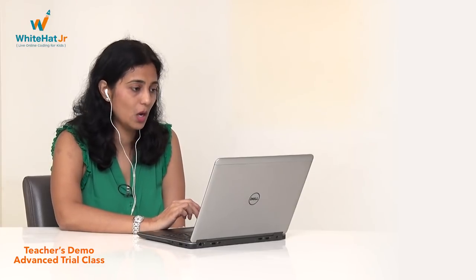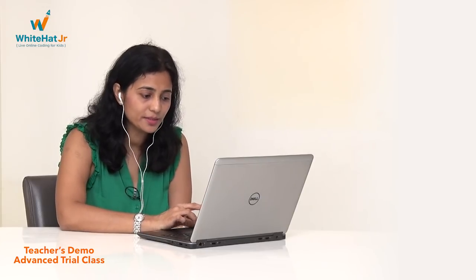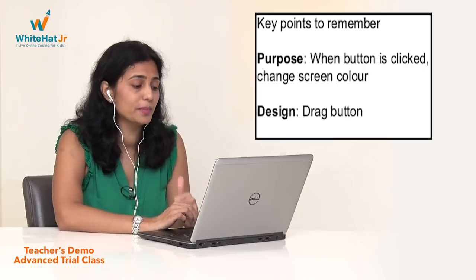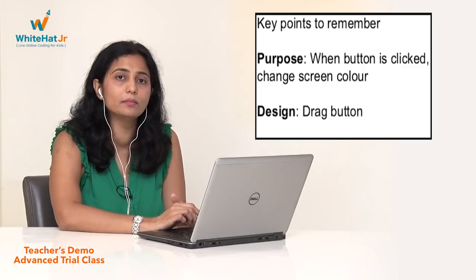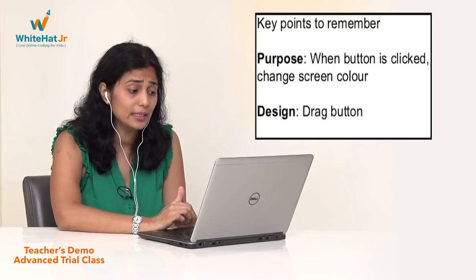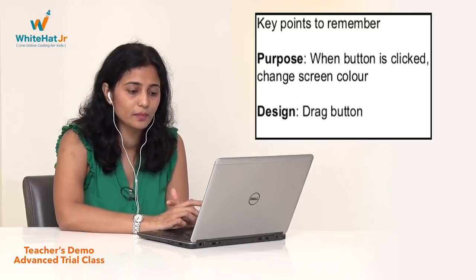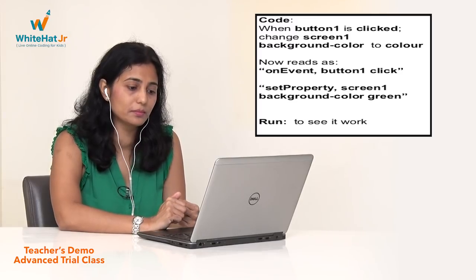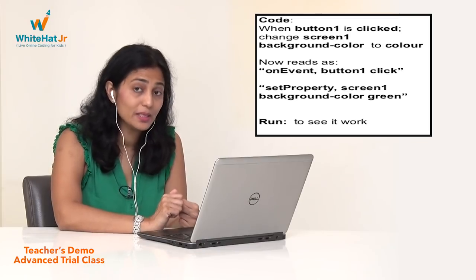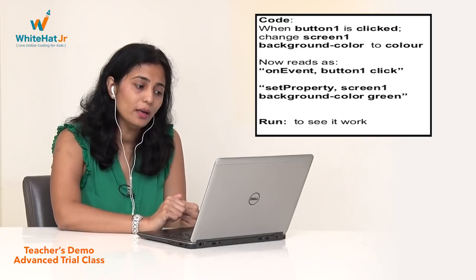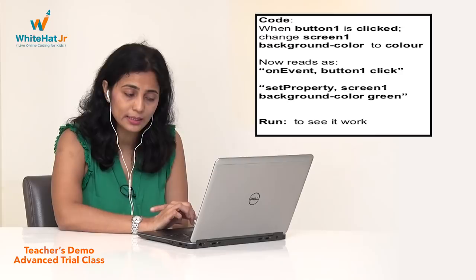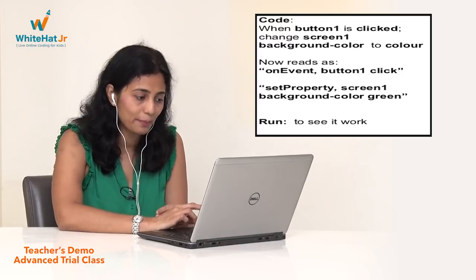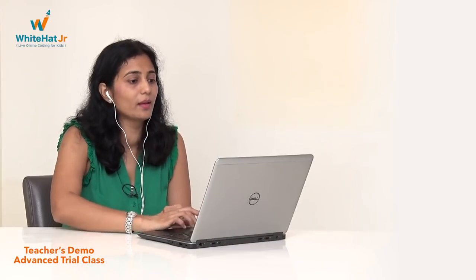You are going to have to do the same thing, but before that let's do a quick recap because there were too many new things we learned today. Key points to remember: Step 1 is purpose — when the button is clicked, change the color of the screen. Step 2 is design — we drag the button. Step 3 is code — on event button1 clicked, we set screen1 background color to green. Step 4 is run — we clicked the run button to test it for working.